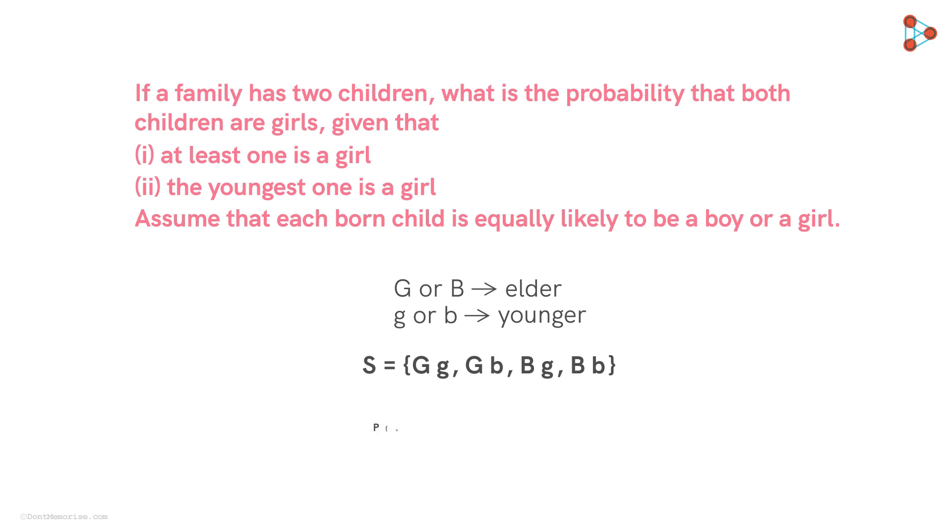Now if we are asked to find the probability such that both the children are girls, then there is only one possibility out of the four. Hence, this probability will be 1 by 4. But we have not been asked this regular probability.